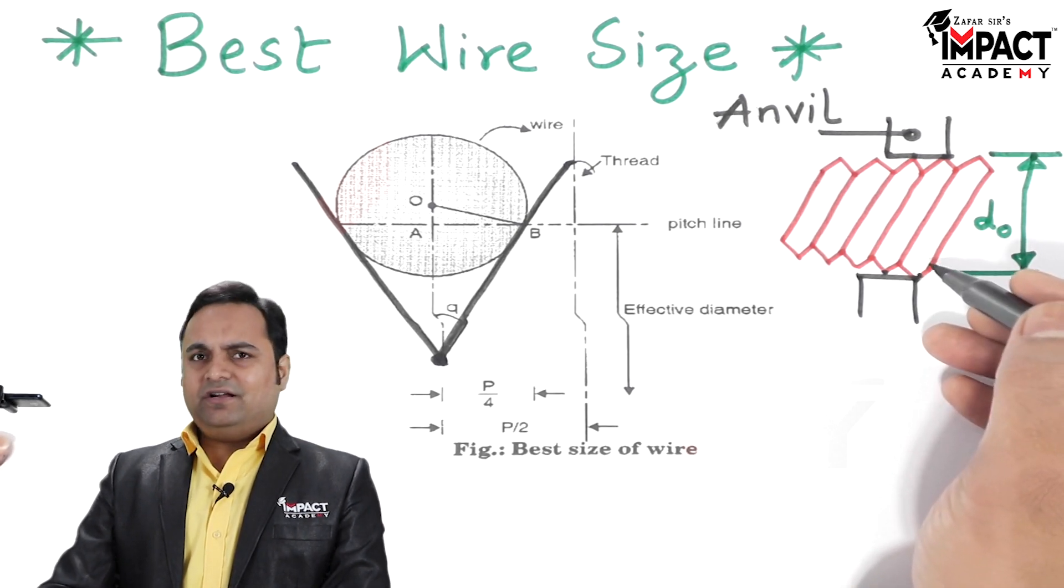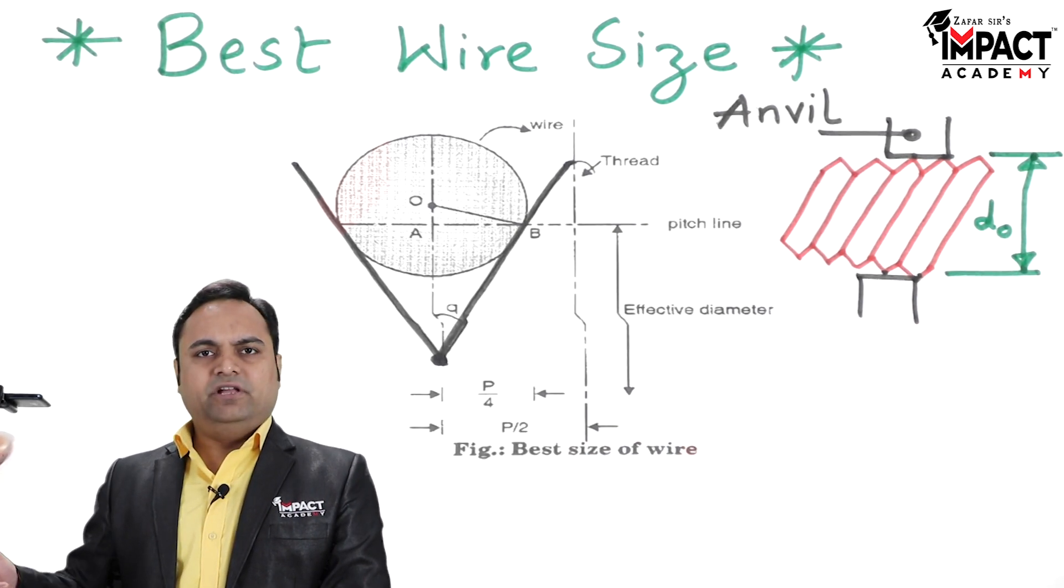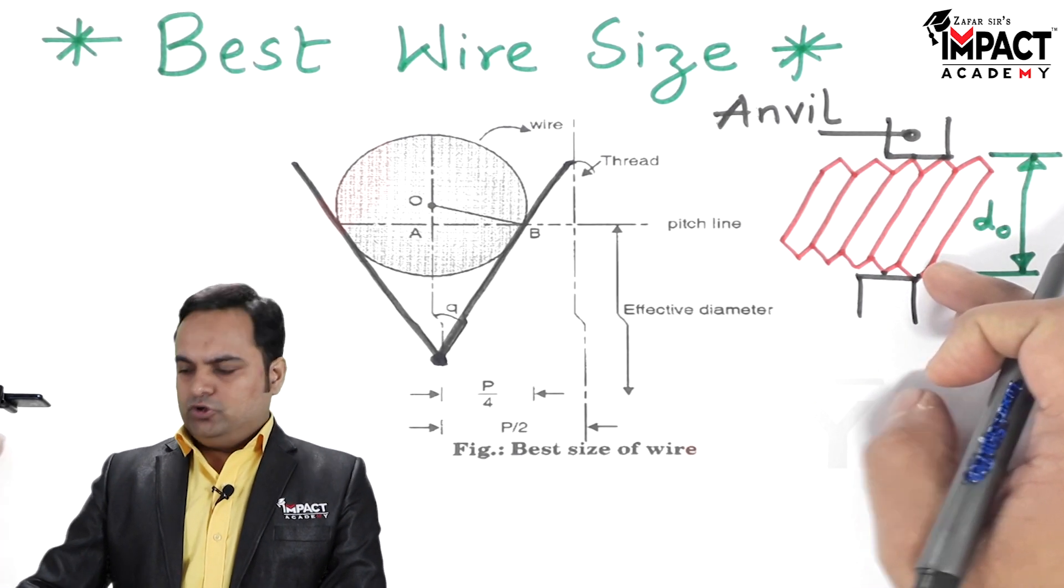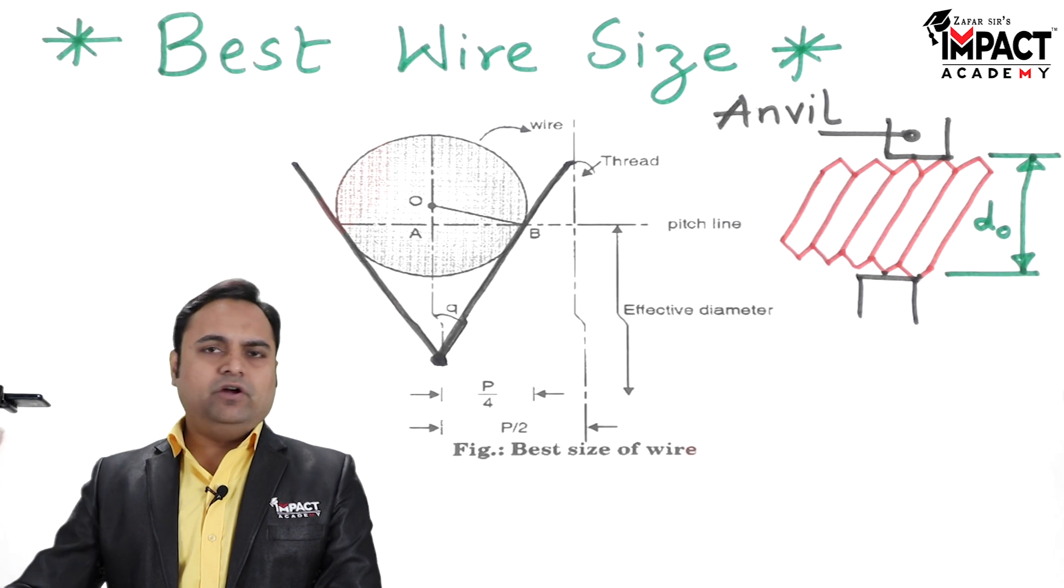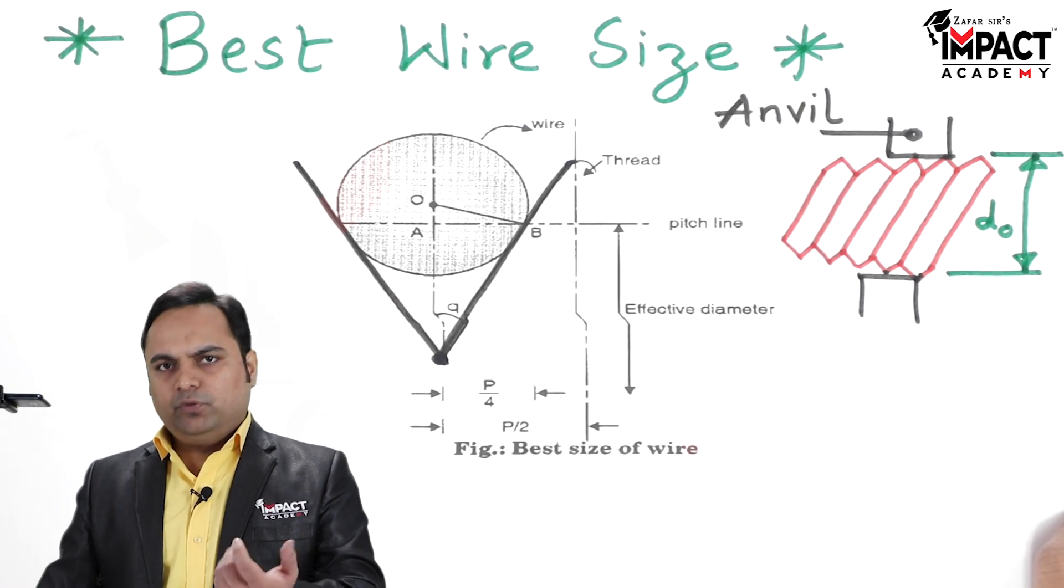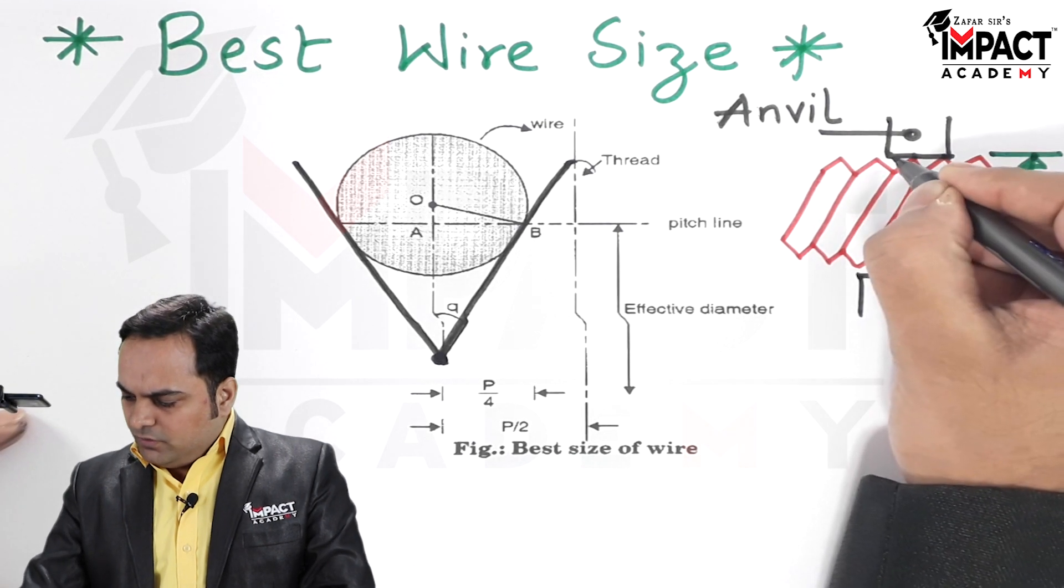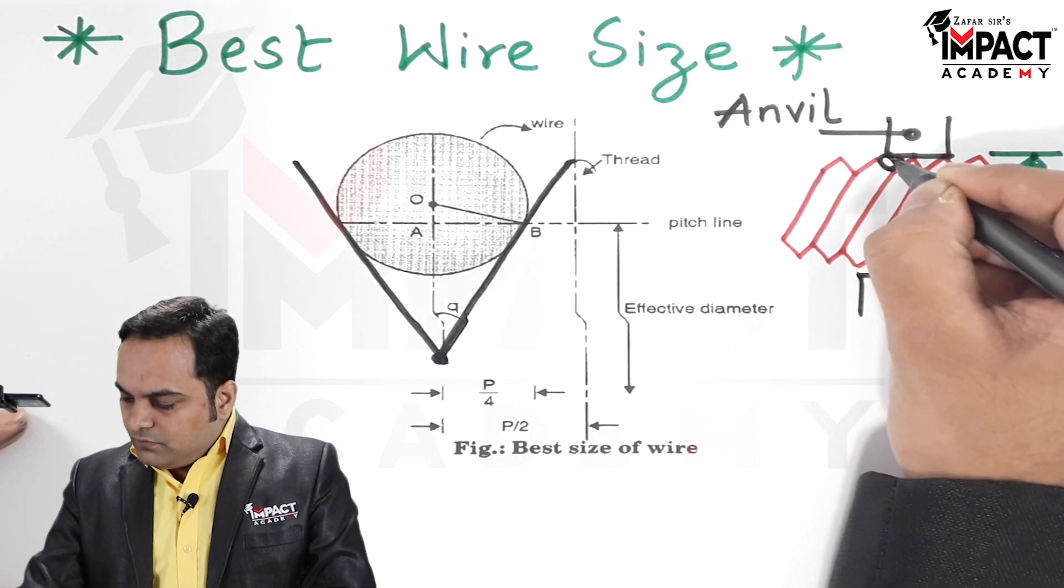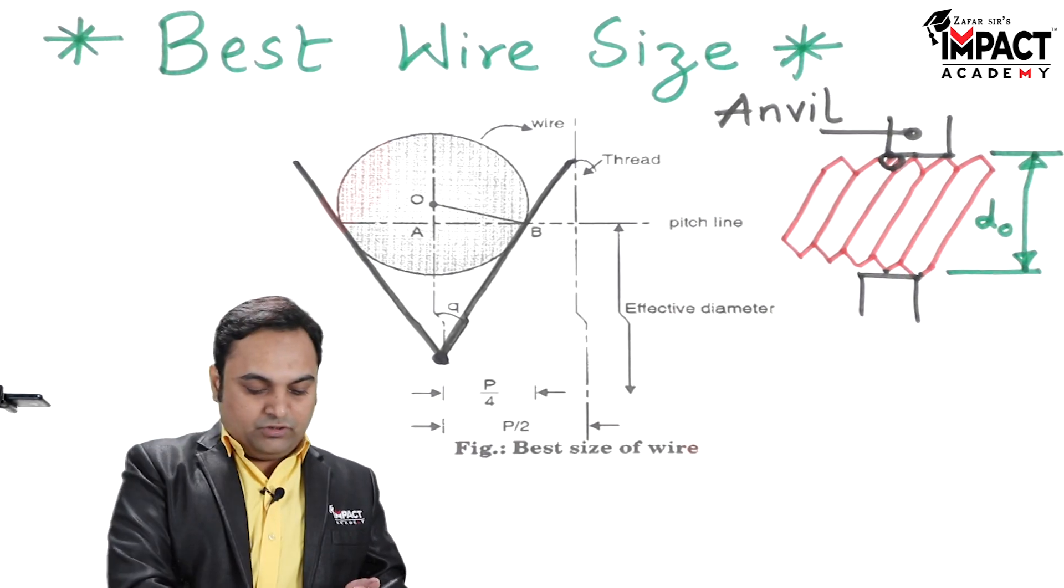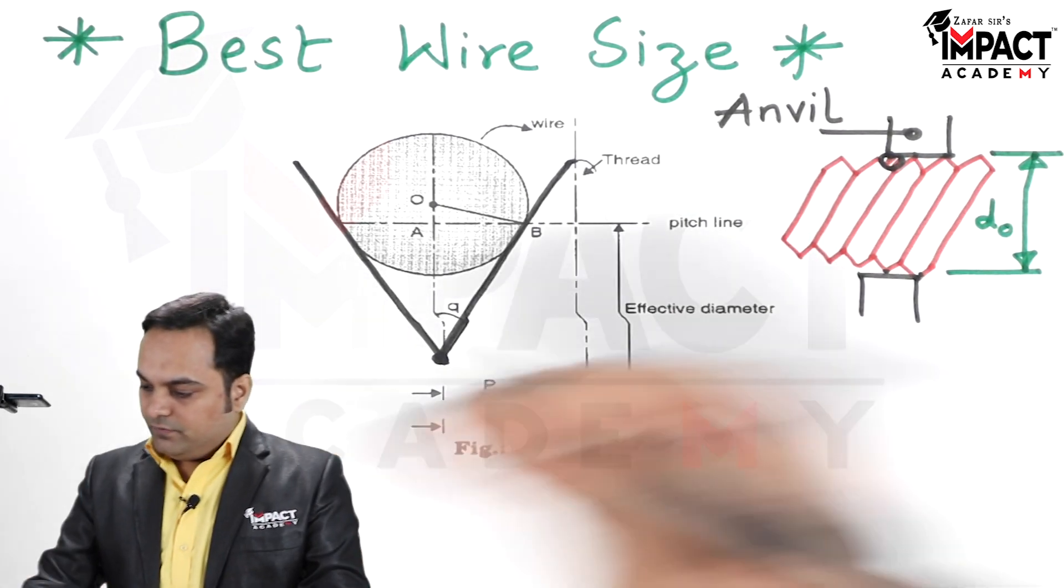Now once we see here that these are pointed edges in contact with the anvil, so there is point contact. If there is point contact there are chances of slipping the anvil, or we can say that the contact is not proper. So in that case the reading which we are going to get, there would be errors in the reading. To avoid that, what we are doing is inserting wires having circular cross section, circular geometry we can say.